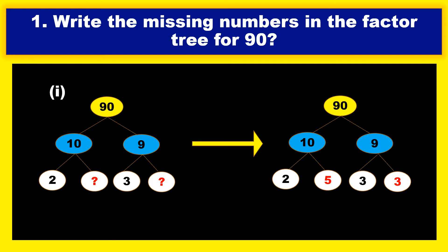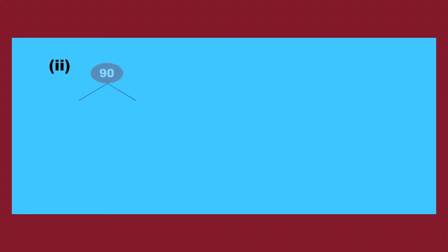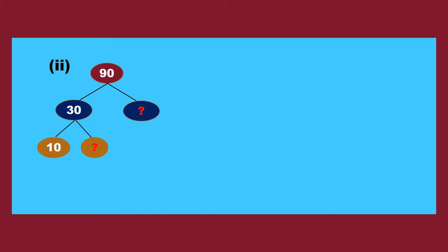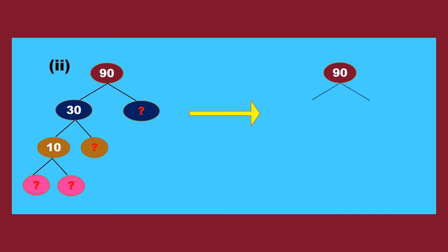Let us go to the next one from this problem. Here is the second factor tree for 90. It is to be split into a product of two numbers: 30 into how much? Next, 30 is 10 into how much? Here 30 is split again because it is a composite number. Again this 10 is also composite so it needs to be split again. So 90 means 30 into 3. We stop at 3 because it is a prime number.